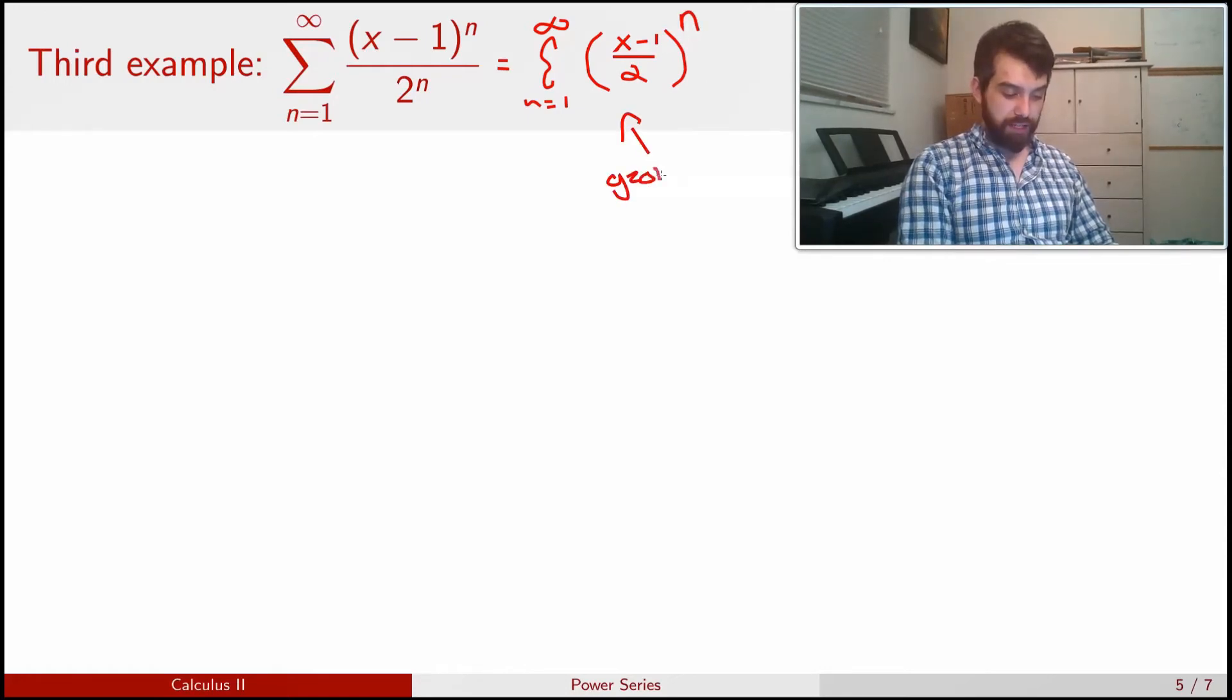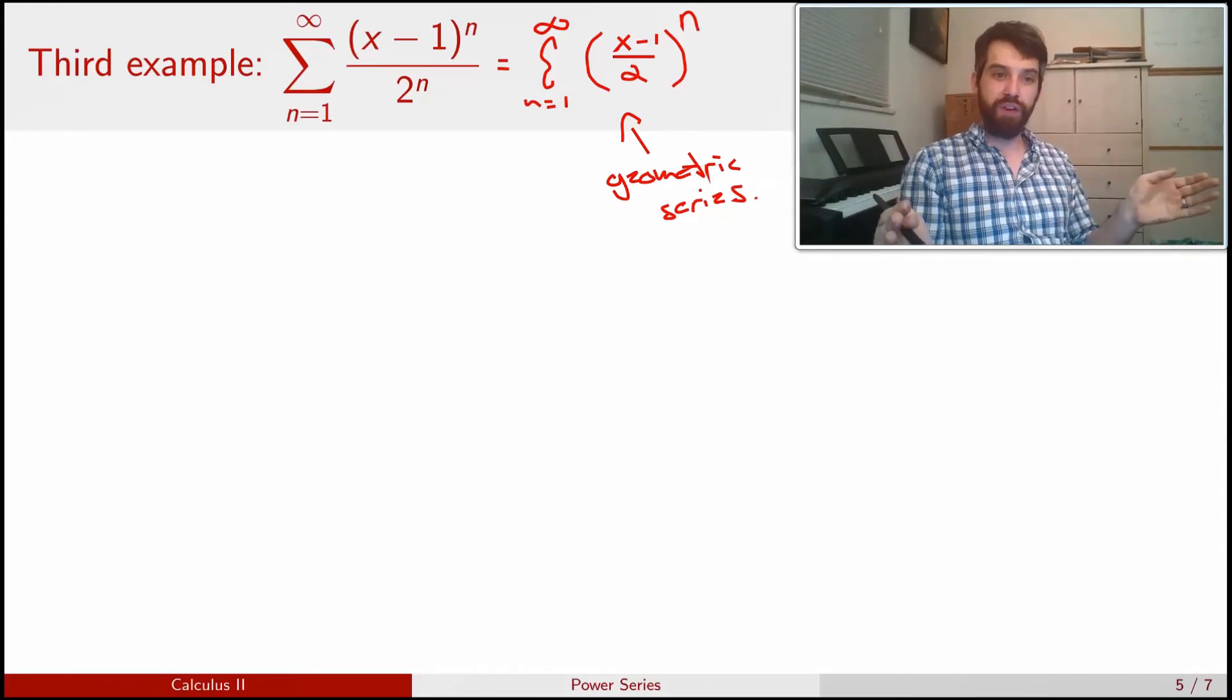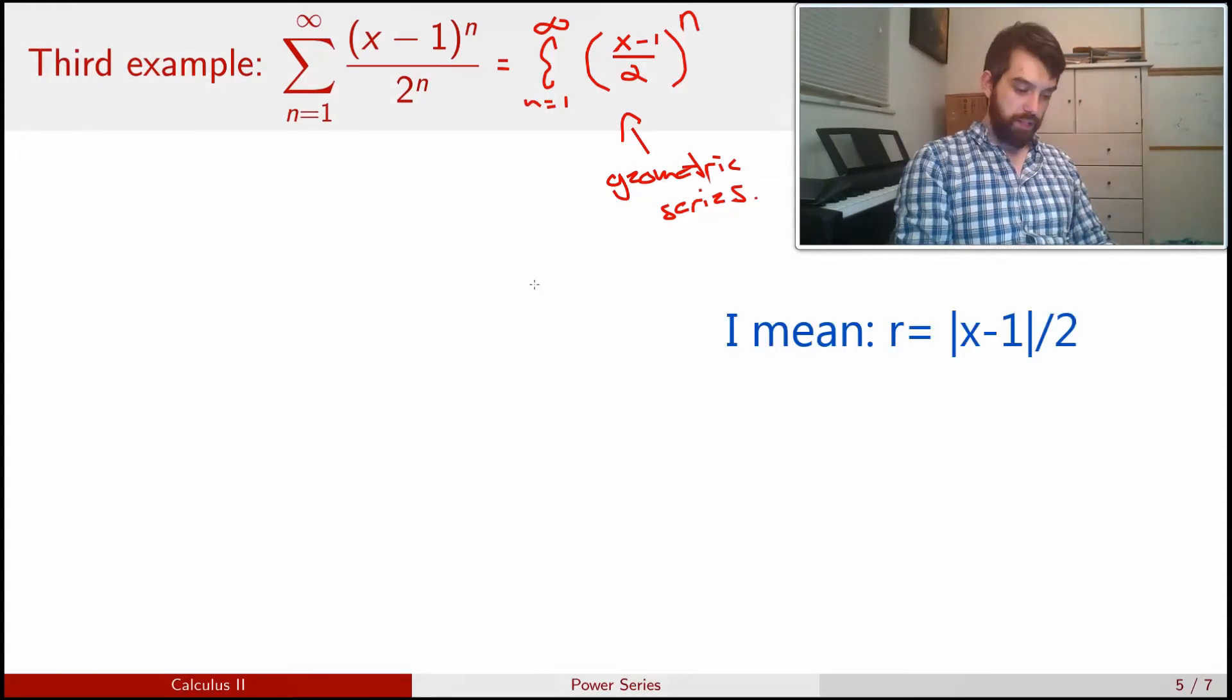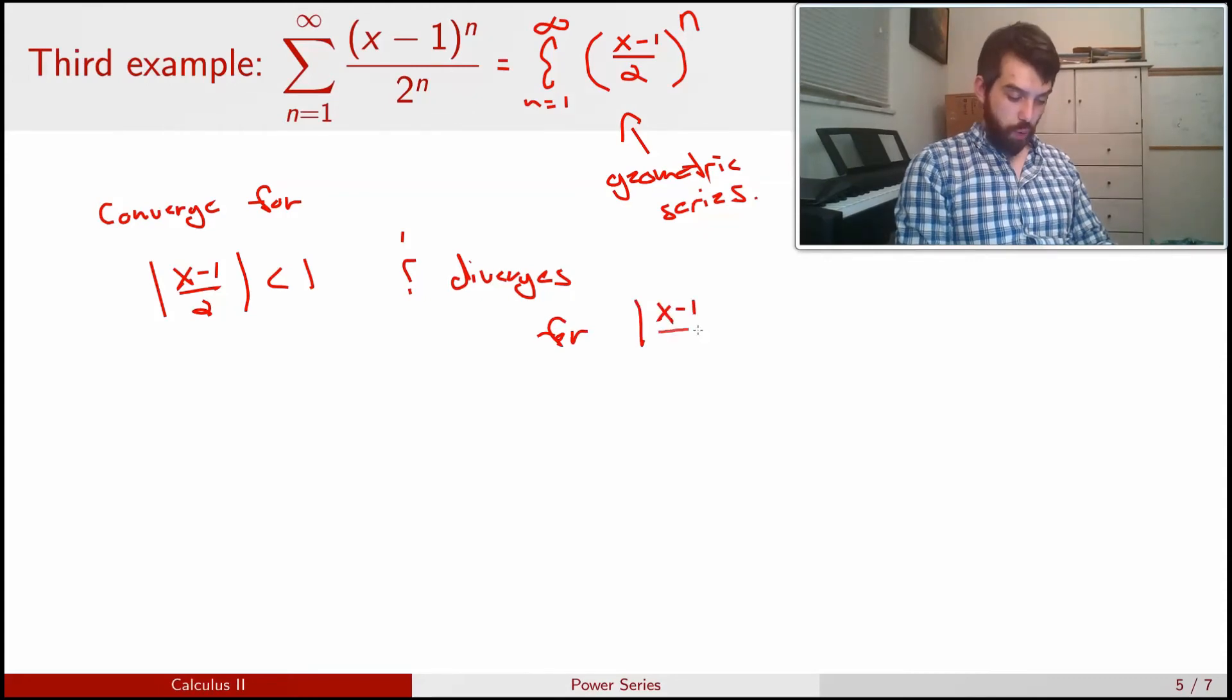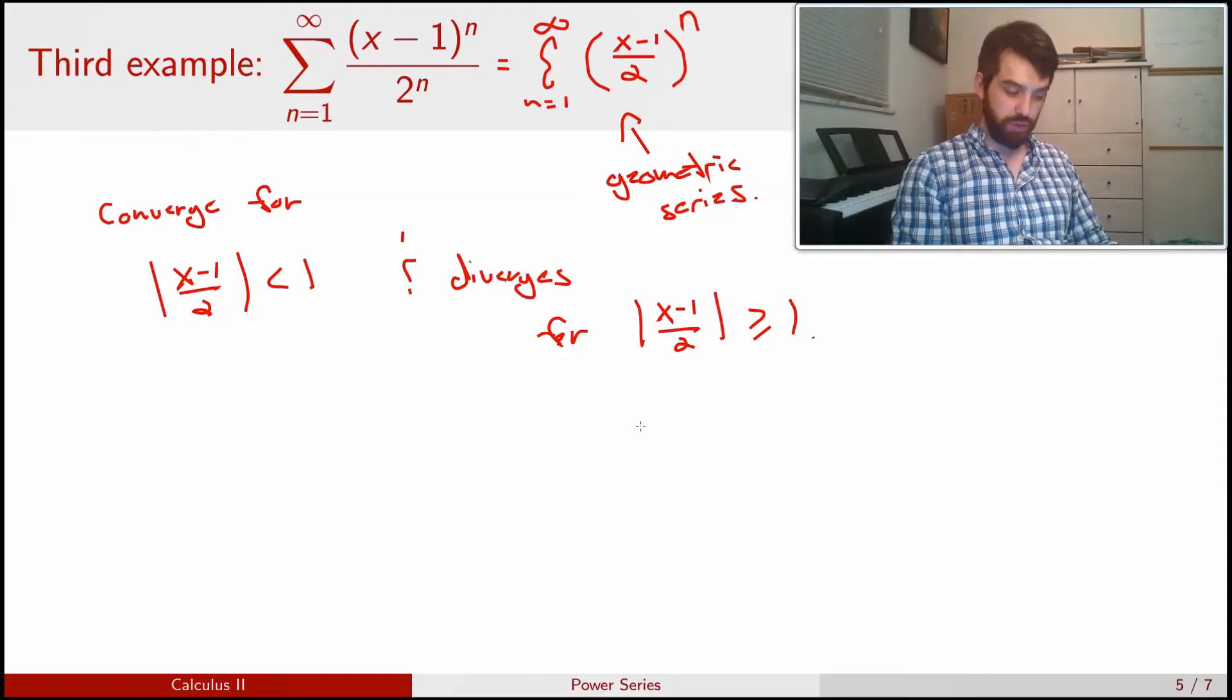And the reason why I write it like this is this is just a geometric series. You might recall that the ratio test was dealing with a wider class of series whose behavior in their limit looked a little bit like a geometric series. But this is exactly a geometric series. It's just a geometric series with ratio r equal to (x - 1) divided by 2. So we know by the geometric series that this is going to converge for |(x - 1)/2| less than 1. And it diverges in the other case, which is |(x - 1)/2| being greater than or equal to 1.